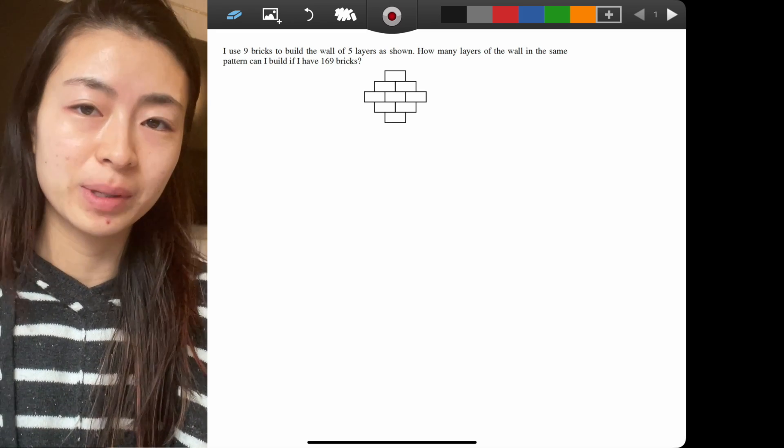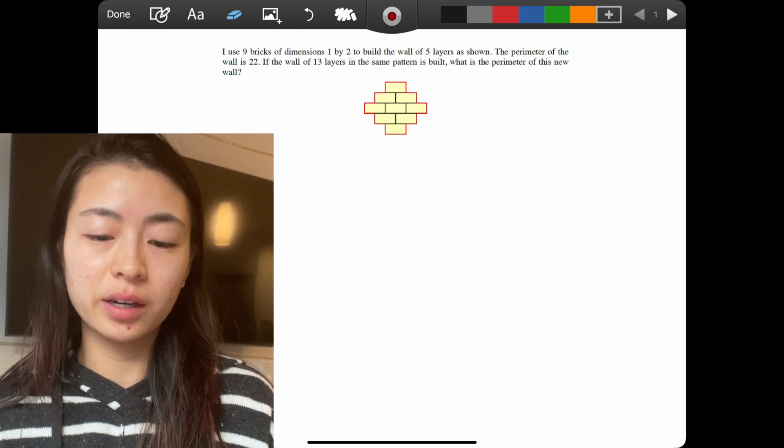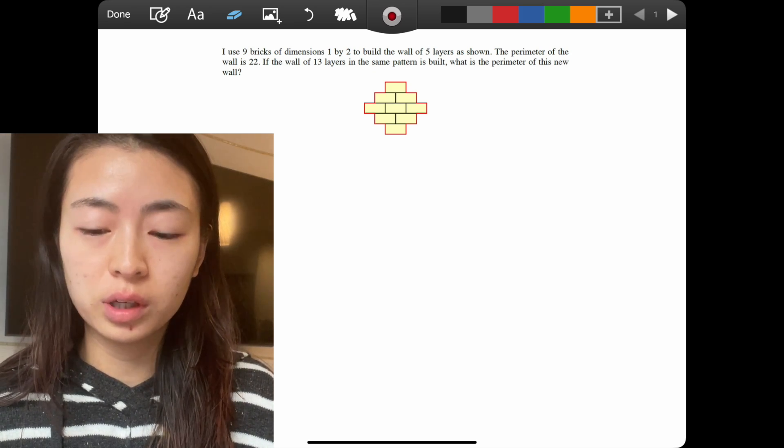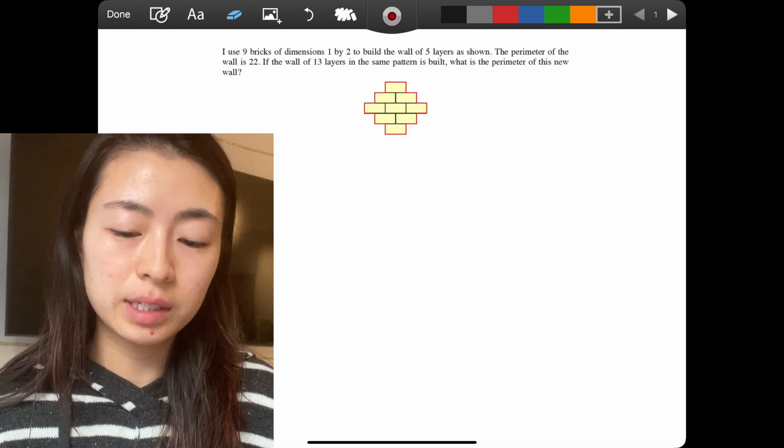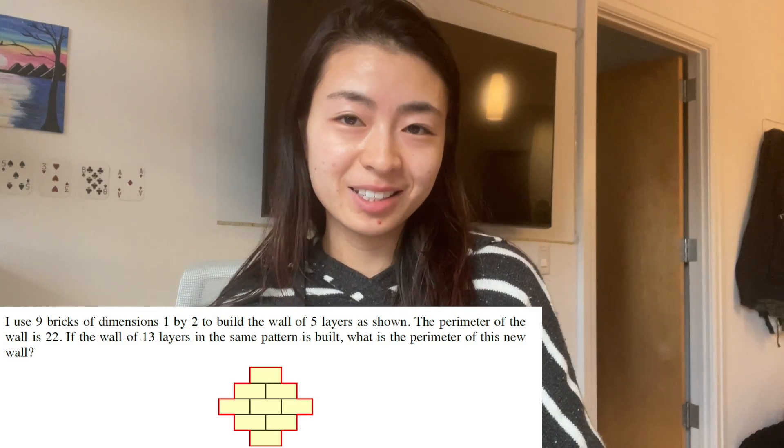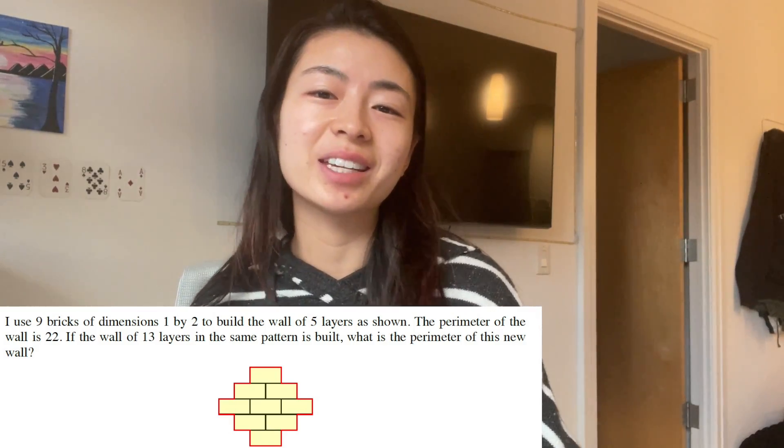I use nine bricks of dimension 1 by 2 to build the wall of five layers as shown. If the wall of 13 layers in the same pattern is built, what is the perimeter of this new wall? To see the solution for how to solve this problem, then check out this video.